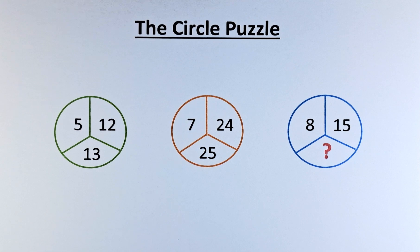Welcome back to the solution of the circle puzzle. The numbers are as follows: in the first circle, we have 5, 12, 13; second circle, 7, 24, 25; and in the last circle, we have 8, 15, and a question mark.